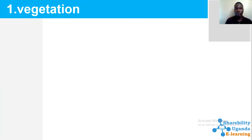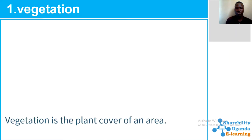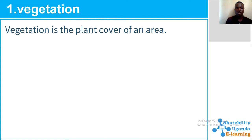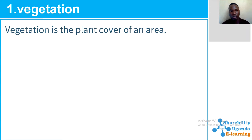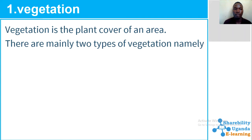First of all, what is vegetation? Vegetation is the plant cover of any area. There are mainly two types of vegetation: we have got planted and natural vegetation.